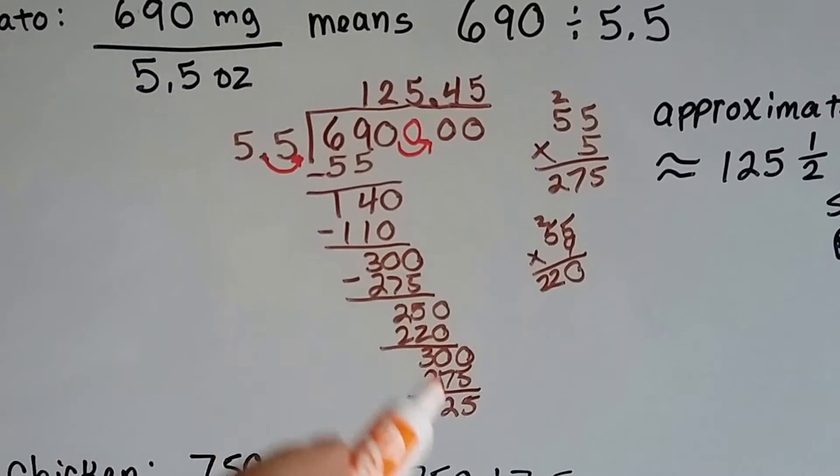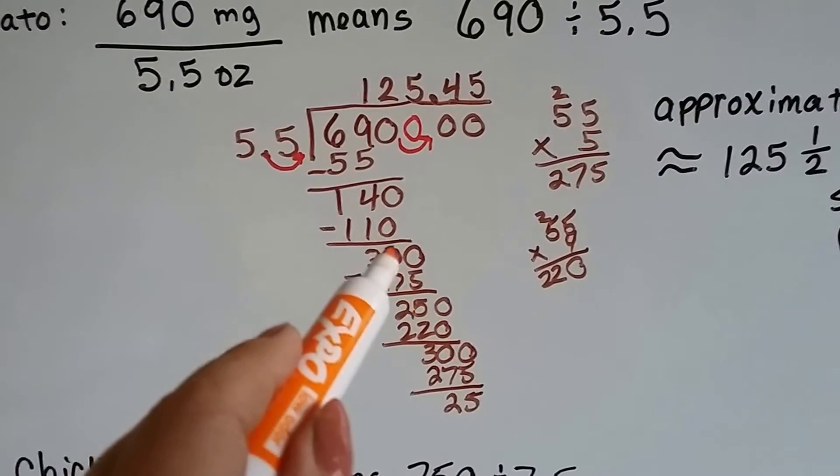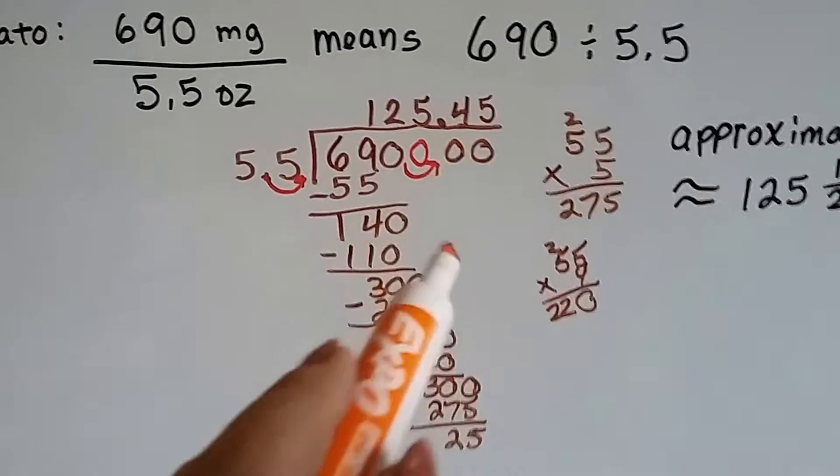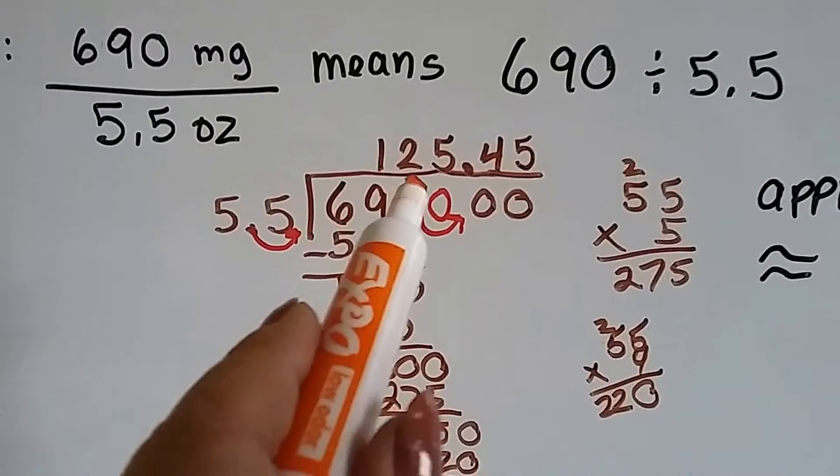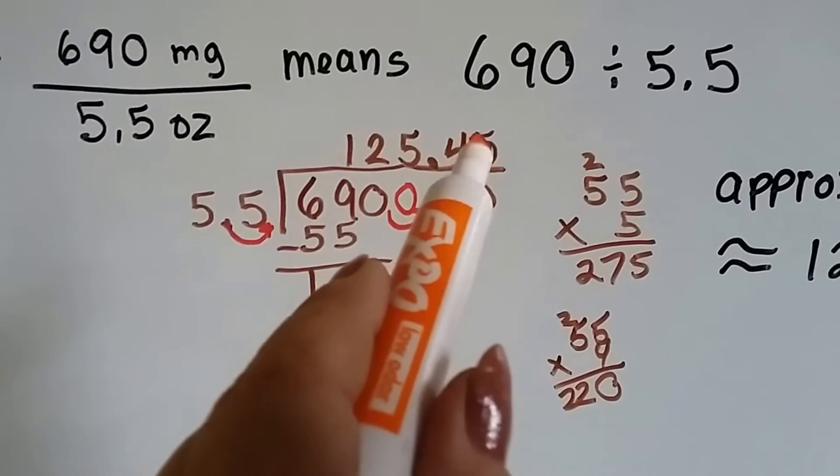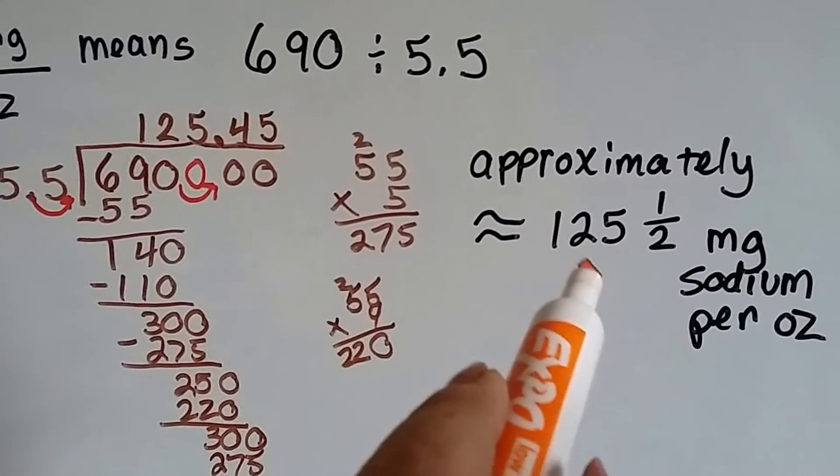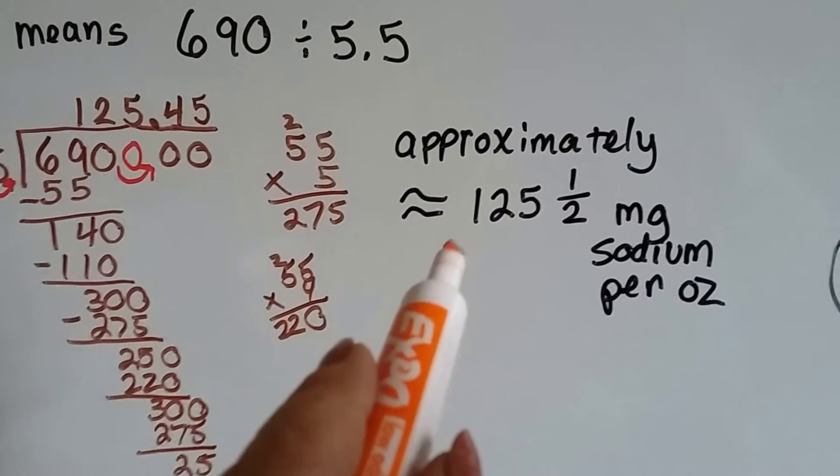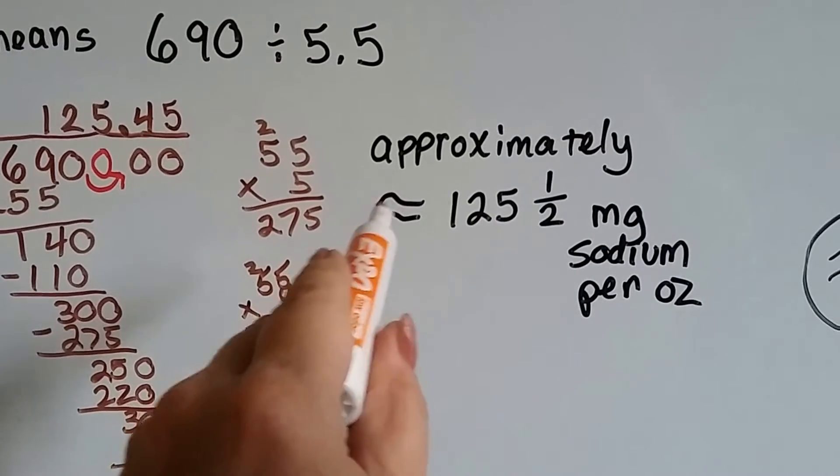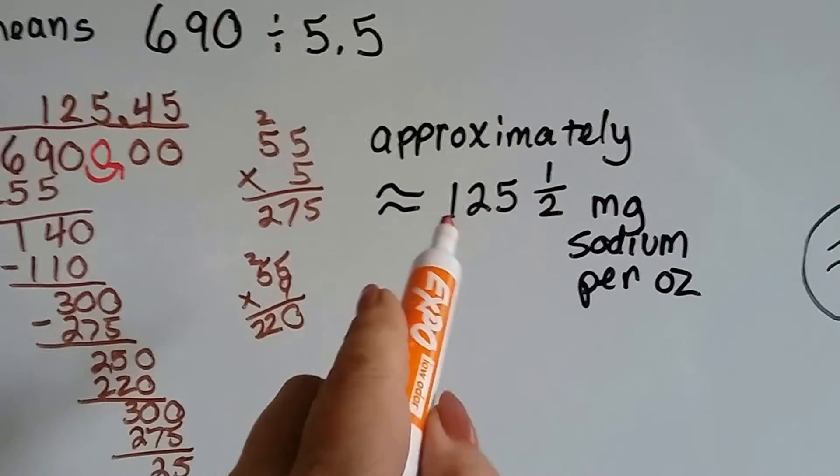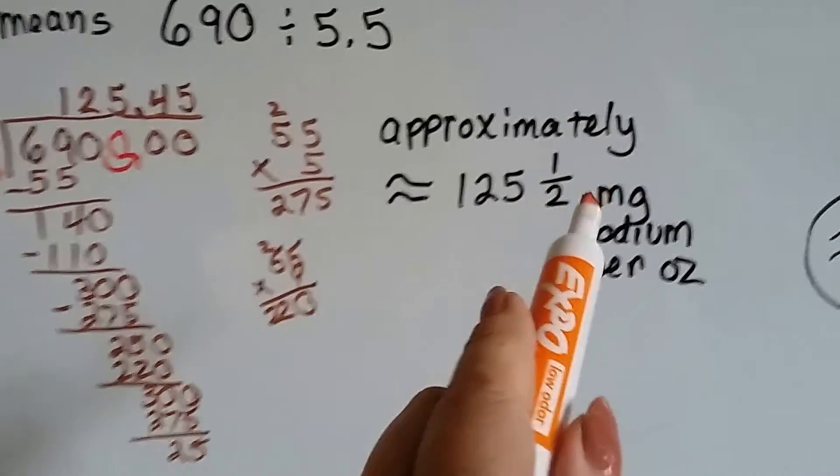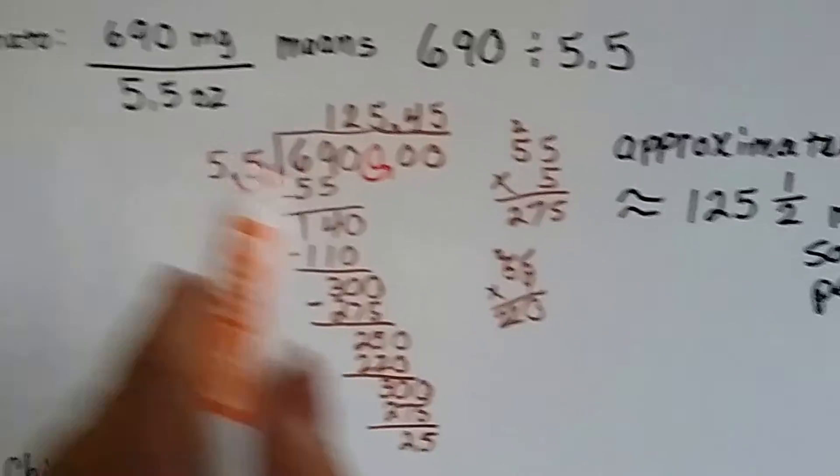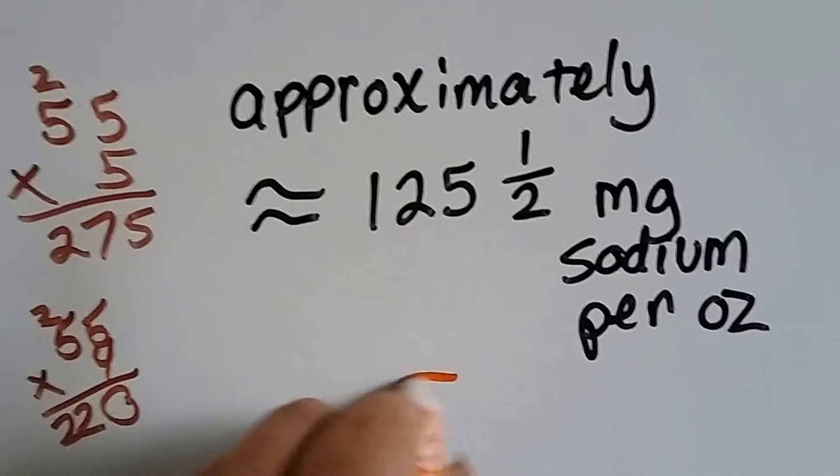Now, I did this, and I kept getting a 300 and a 250 and a 300, and I was about to get another 250. And I said, okay, it's going to be a repeating decimal. So I got 125.45. So I rounded it off to 125-and-a-half. So there's roughly, approximately, and this is the approximate sign. These two little wavy signs means approximately, 125-and-a-half milligrams of sodium per ounce in the tomato. So that's tomato.